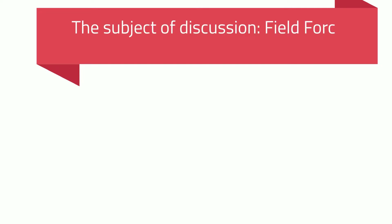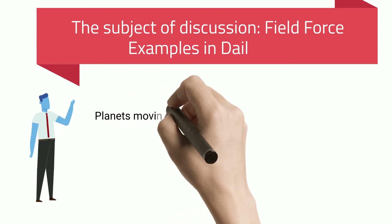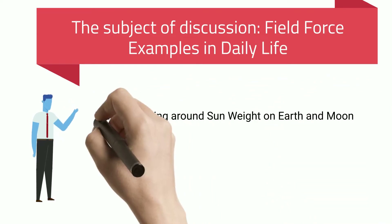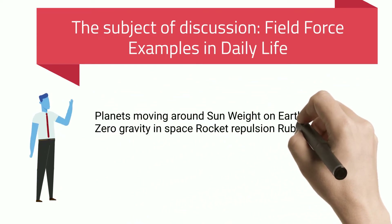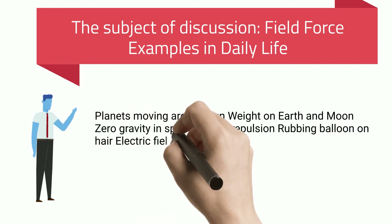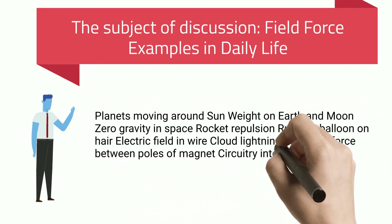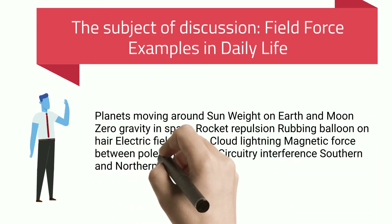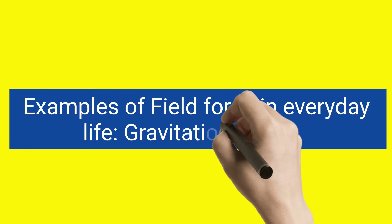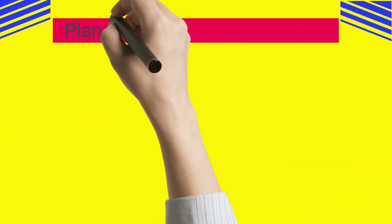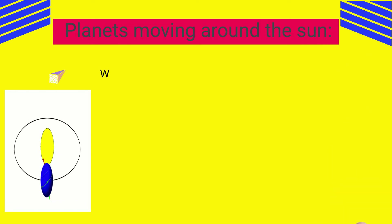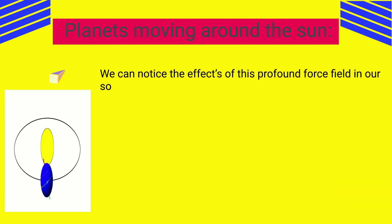Field force examples in daily life include: planets moving around the sun, weight on Earth and Moon, zero gravity in space, rocket repulsion, rubbing a balloon on hair, electric field in a wire, cloud lightning, magnetic force between poles of a magnet, circuitry interference, and the southern and northern lights.